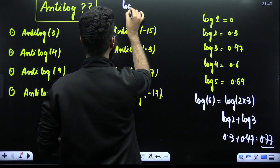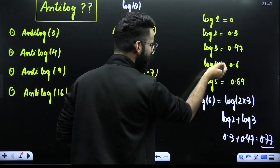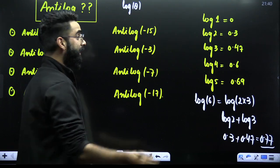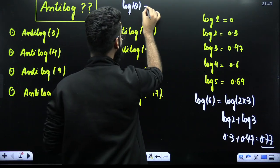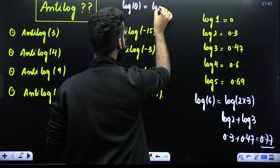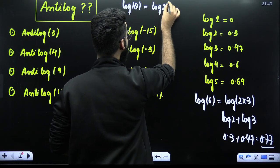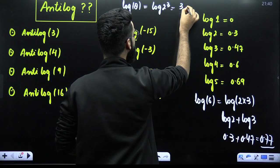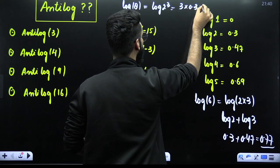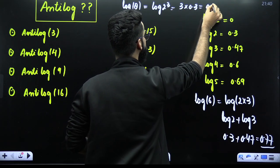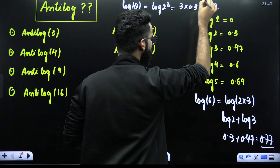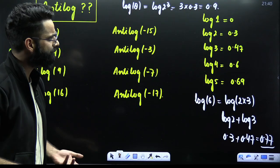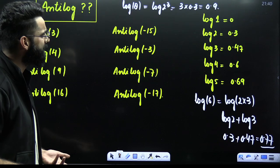Similarly, for example, if I have to calculate log of 8 — I have not written log of 8 here — but we can calculate it. Log of 8 can simply be written as log of 2³, which becomes 3 × log 2. Log 2 is 0.3, so it comes out to be 0.9. As simple as that.